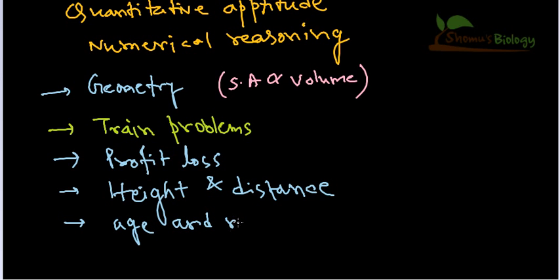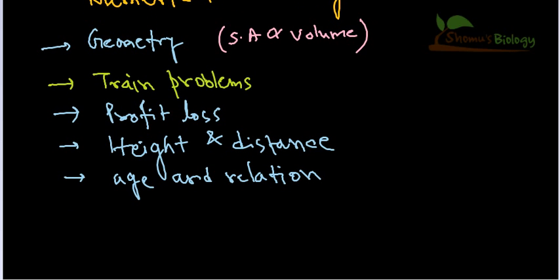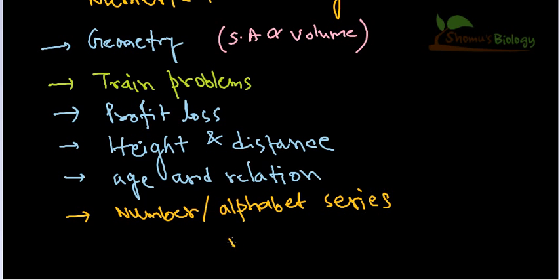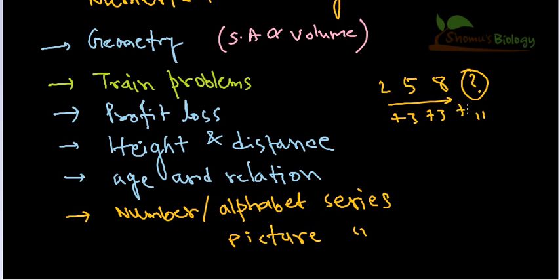Age and relation is very important to understand for CSIN NET. Previous years they provided questions on age and relation. You also need to know about number series or alphabet series problems. These problems test your reasoning. For example, the series 2, 5, 8 - what's the fourth one? The answer is 11, because if you follow the series, it's increasing plus 3 every time, so ultimately it will be 11.